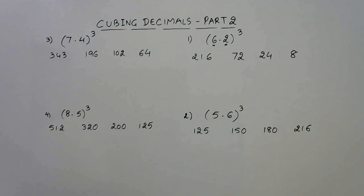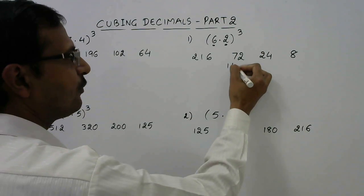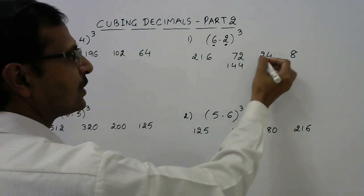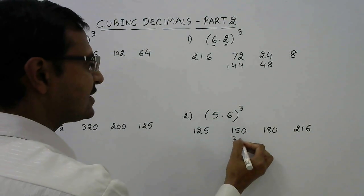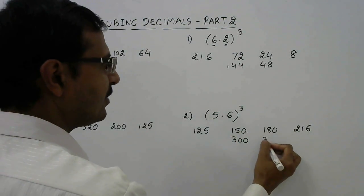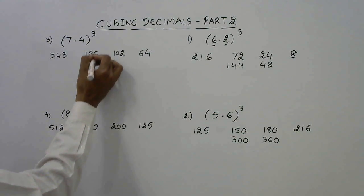After getting all these 4 numbers we need to double the numbers which are written in the middle. 72 double is 144, so we will write it under this. 24 double is 48, 150 double is 300, 180 double is 360.